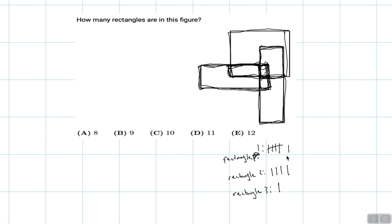So in total, we have six plus four plus one, which is a total of 11 rectangles in the figure. So the answer is choice D.